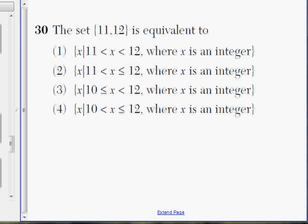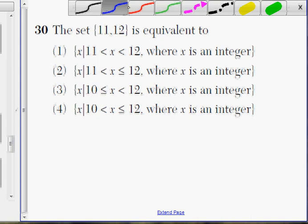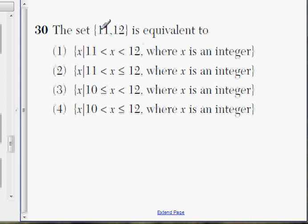Number 30. Set notation. Another way to write out this set, bracket 11 comma 12, I'm looking for a number. It's the same as number x, greater or equal to 11 but less than or equal to 12. And it could be a lot of different numbers here.